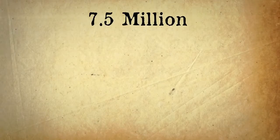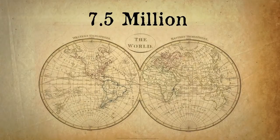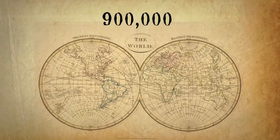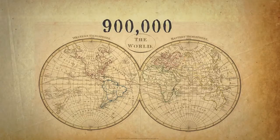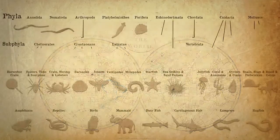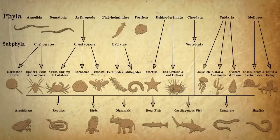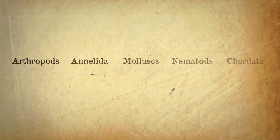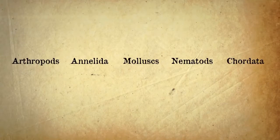There are thought to be over 7.5 million species of animal on planet Earth, of which 900,000 have been described. These are arranged into over 30 phyla, of which nine are the most common, and five are the main animal phyla.